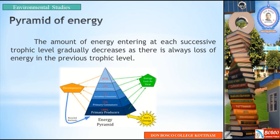We can look at the pyramid of energy graphically. The primary producers generate energy at the base level, and that energy is directly absorbed and passed upward through the trophic levels.